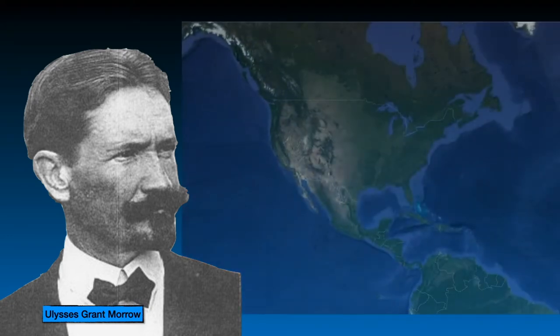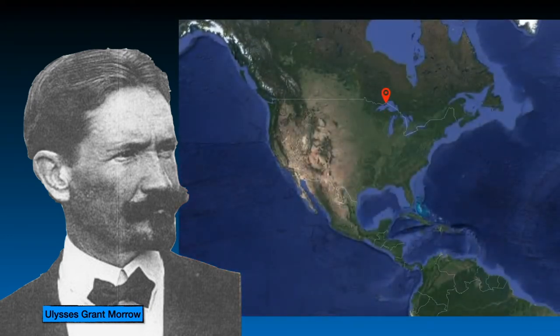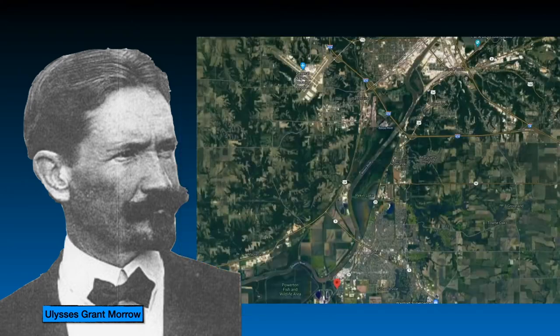On July 25, 1896, Ulysses Grant Morrow, the controversial editor of a newspaper, conducted a similar experiment to prove that the Earth is not flat but spherical. But what he saw was not pleasant for that conclusion.